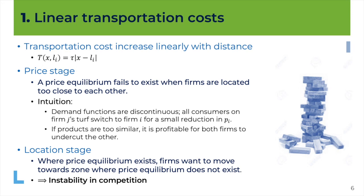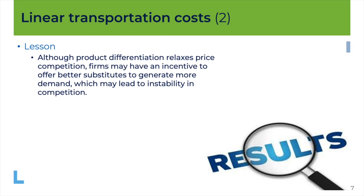The key message to take away from the case with linear transportation costs is this instability in competition. Although product differentiation relaxes price competition, firms may have an incentive to offer better substitutes — products closer to one another — in order to generate more demand, which may lead to instability in competition. There are two forces here which we will describe better in what follows.